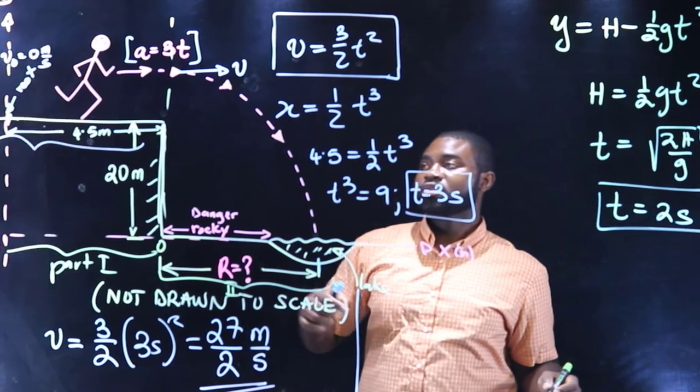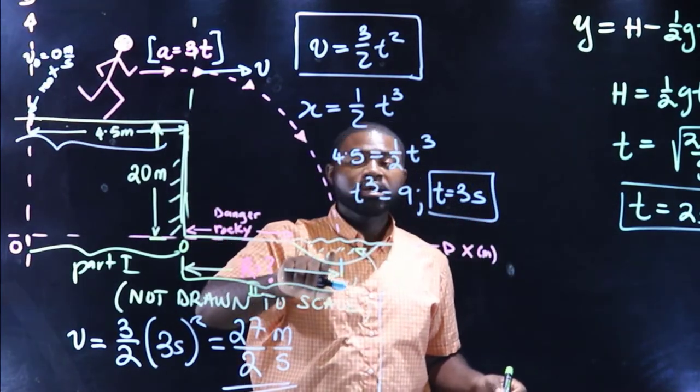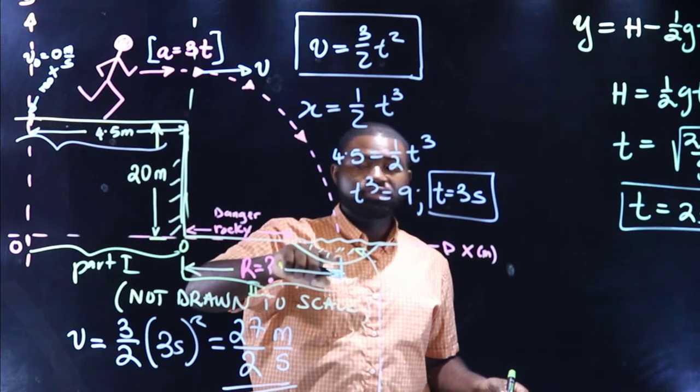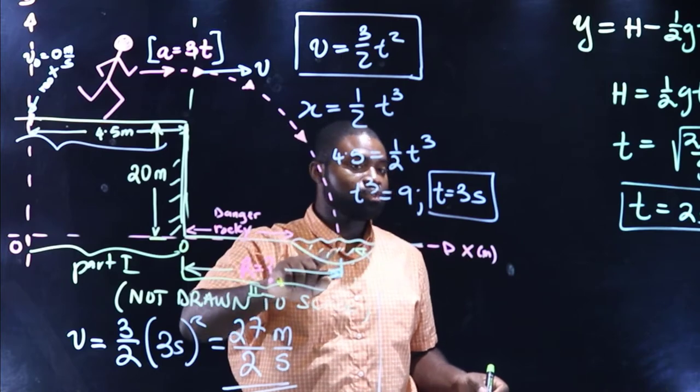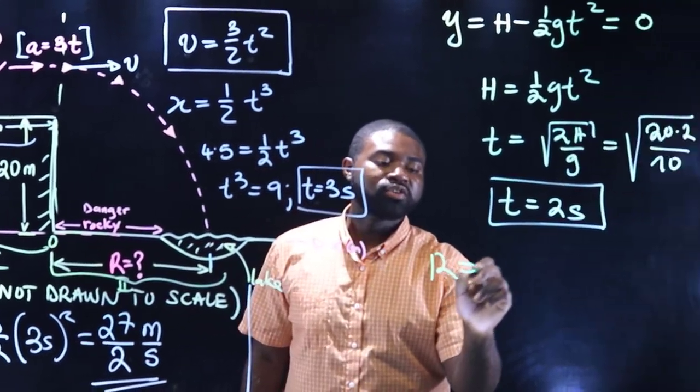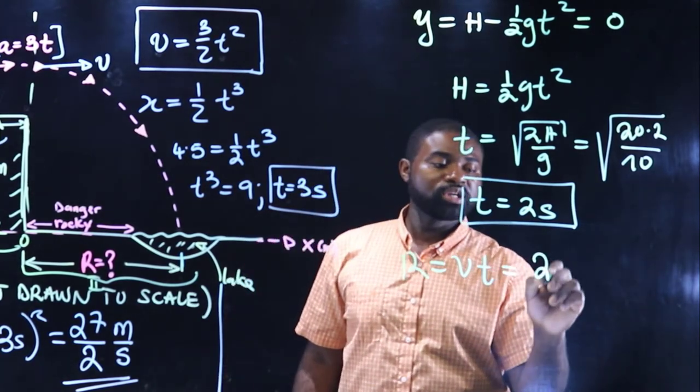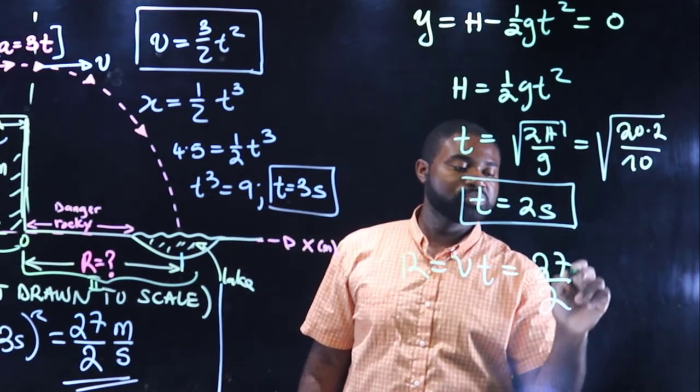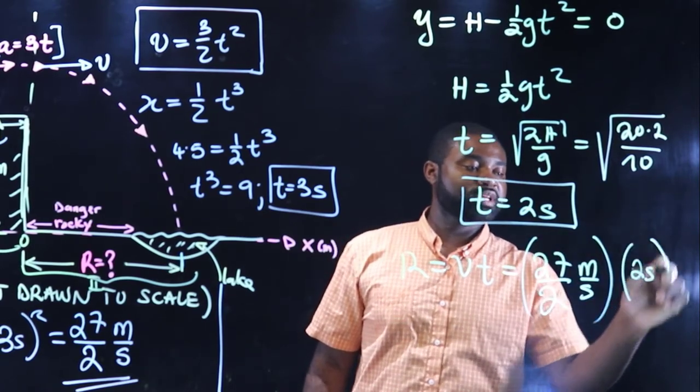The time for Johnny to fall to the lake, it takes two seconds for Johnny to walk to lift off the cliff and hit the surface of the water. So this would mean that R is equal to v times t, which is going to be equal to 27 divided by 2 meters per second multiplied by 2 seconds.